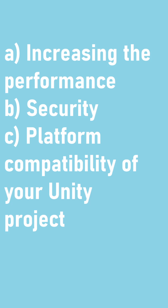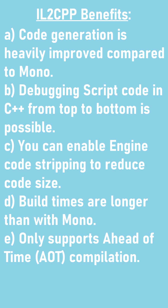The benefits of IL2CPP are: code generation is heavily improved compared to Mono; debugging script code in C++ from top to bottom is possible; you can enable engine code stripping to reduce code size. The drawbacks are that build times are longer than with Mono, and it only supports ahead-of-time (AOT) compilation.